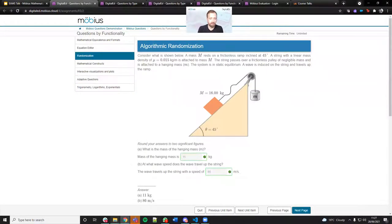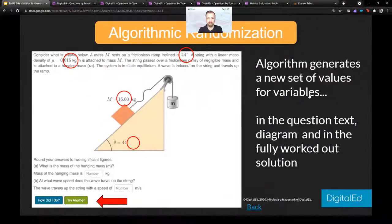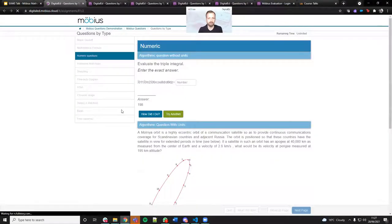Another one I wanted to talk about was unit equivalence. We can see that this is explicitly given in this question in terms of the response needs to be in kilograms and in metres per second, but we can also get freedom with this.